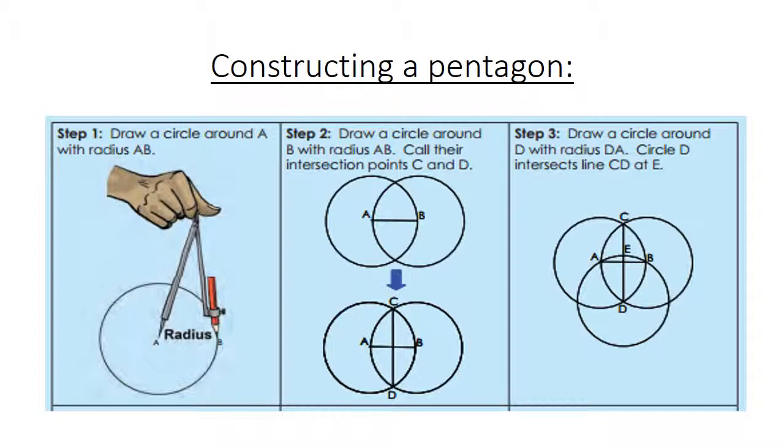Step number 3. Now you draw a circle around D with radius DA. Circle D intersects the line CD at E.